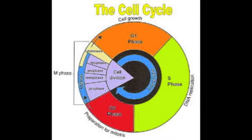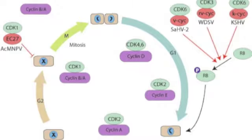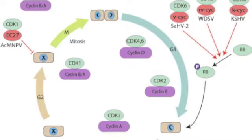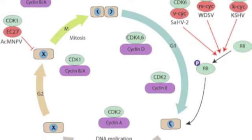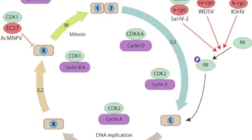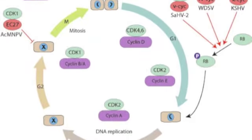The cell cycle depends on the type of cell and what its function is. Checkpoints are control points where there are stop-and-go signals that regulate the cycle. What allows for the cycle to keep going? Cyclin, cyclin-dependent kinases, and MPF are proteins that help trigger progression through the cell cycle.